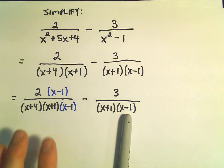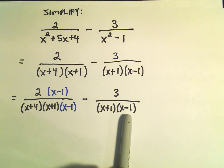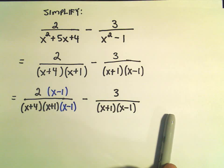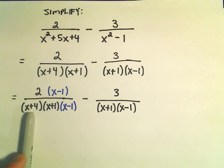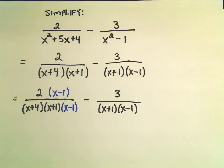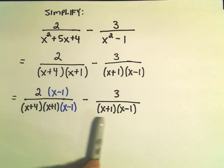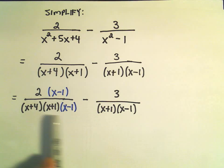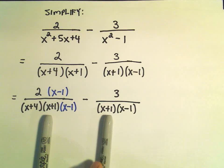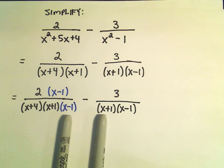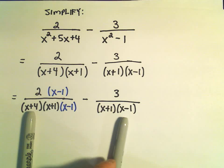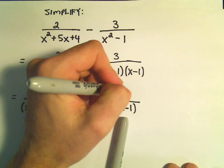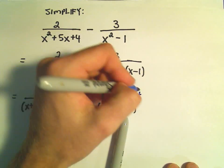And then, once you do this with one of the fractions, notice there's no other factors that are present in the second fraction. This is going to be our common denominator, x plus 4, x plus 1, x minus 1. So I do the same thing for my second fraction. The first fraction has an x plus 4, but the second fraction doesn't. So, we have to multiply top and bottom by x plus 4.